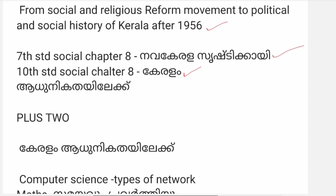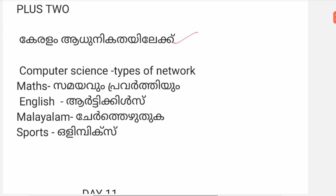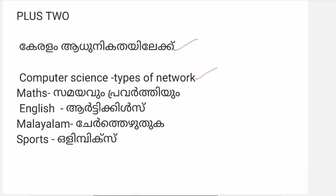This is related to Plus 2 in Kerala History. Kerala History is the first chapter. From Social and Religious Reform Movement to Political and Social History of Kerala after 1956 — Chapter 3 notes. Computer Science covers types of network. We already have classes. We will discuss articles in English and previous questions. Malayalam is the first chapter, so we are doing three years.